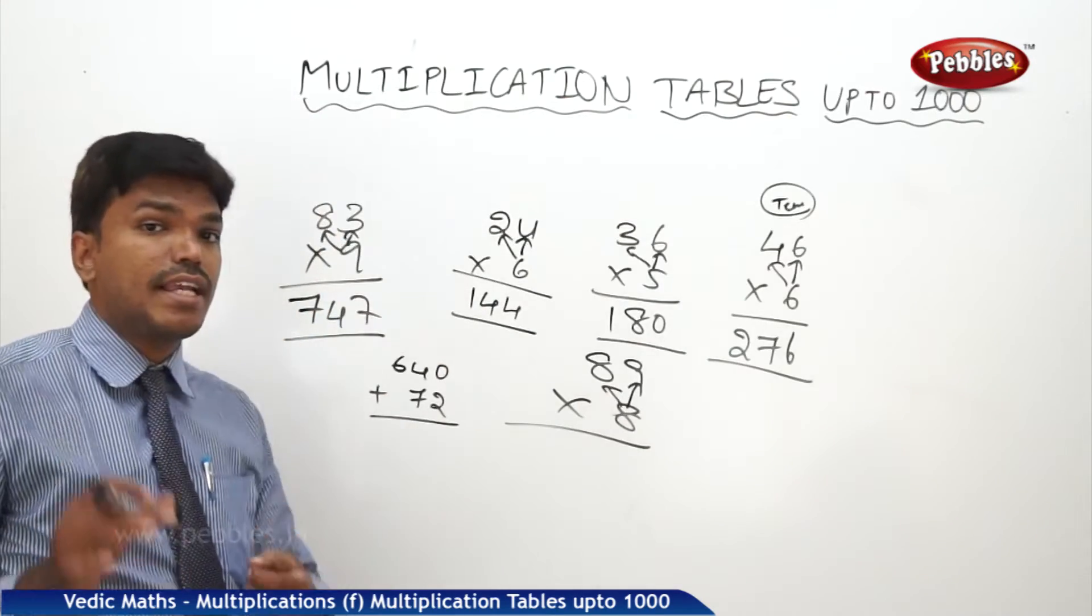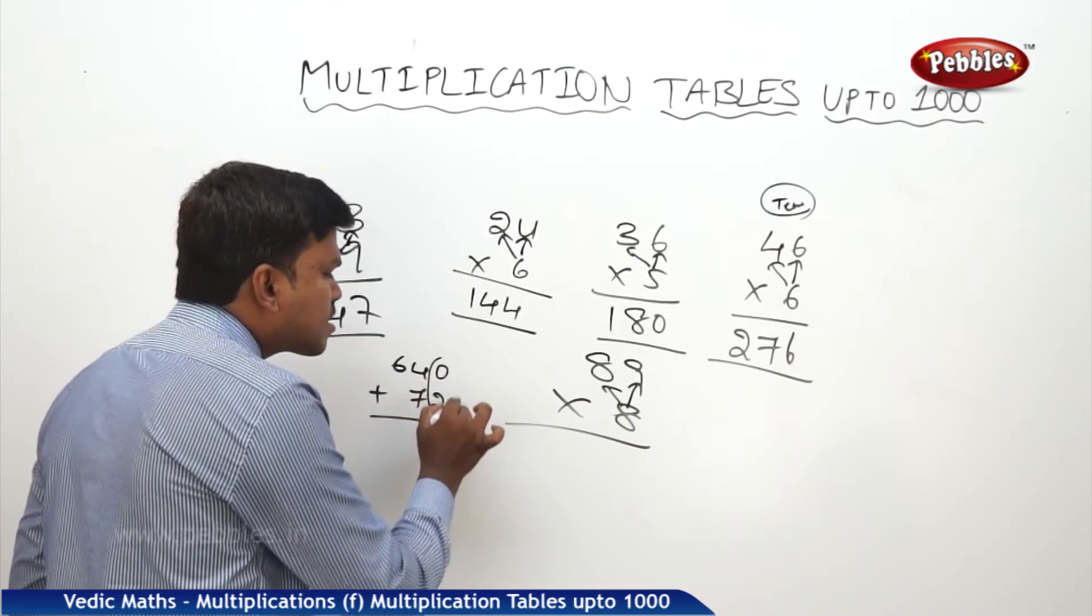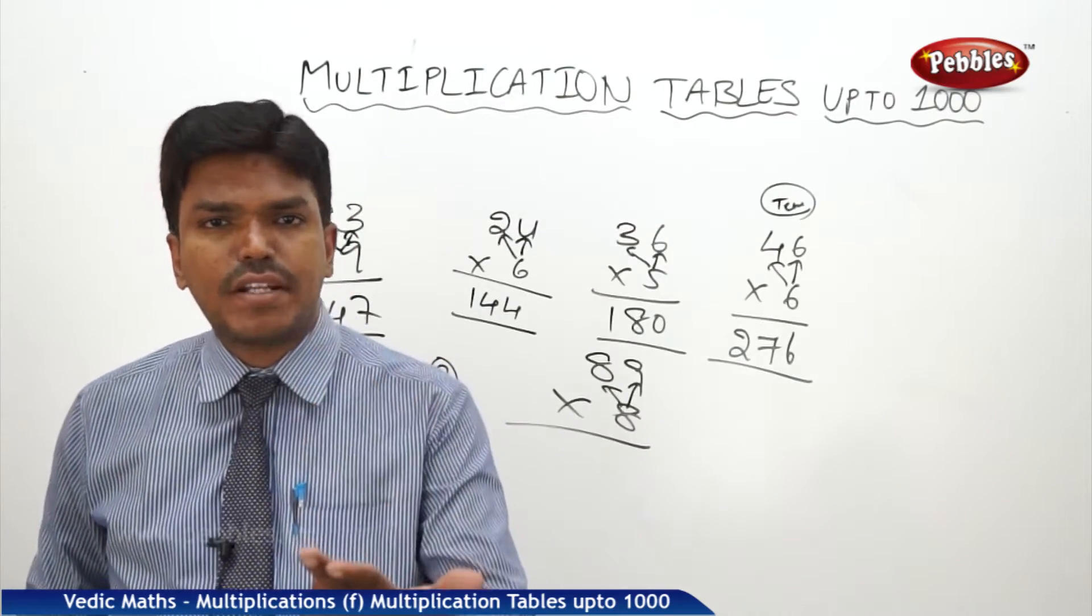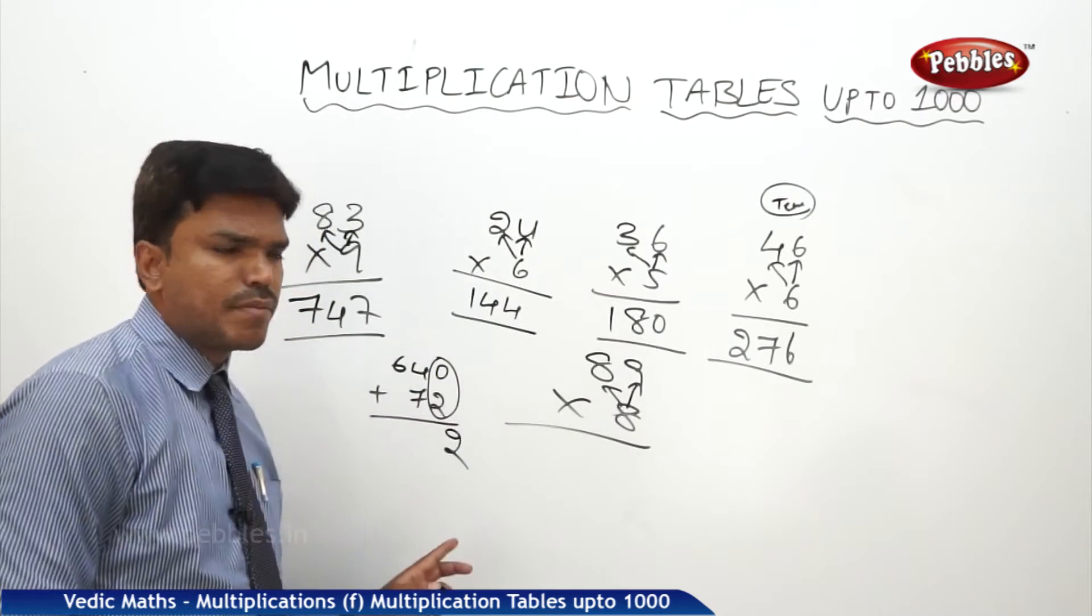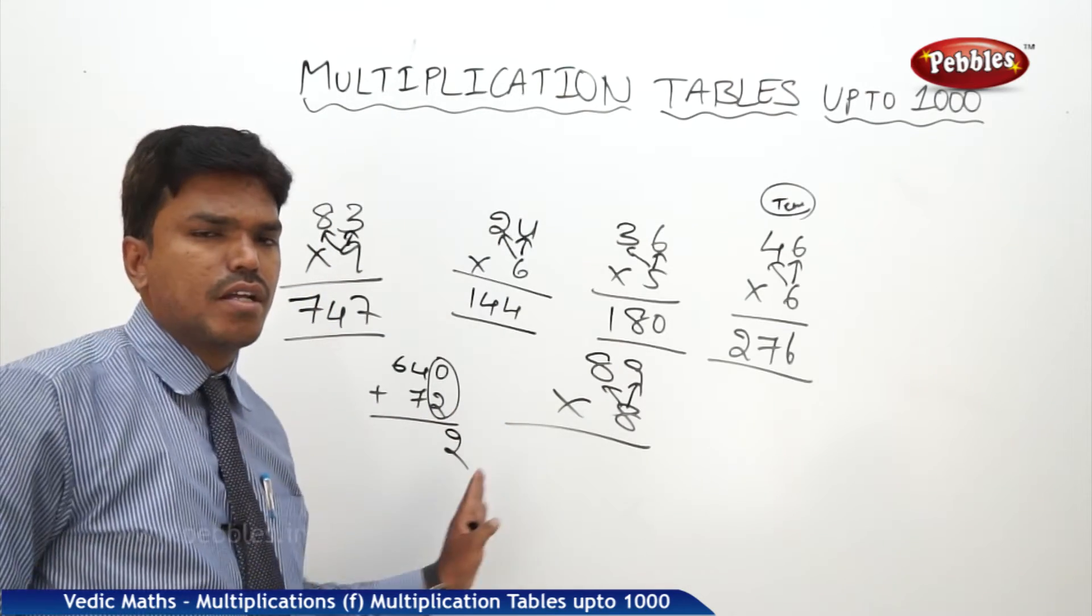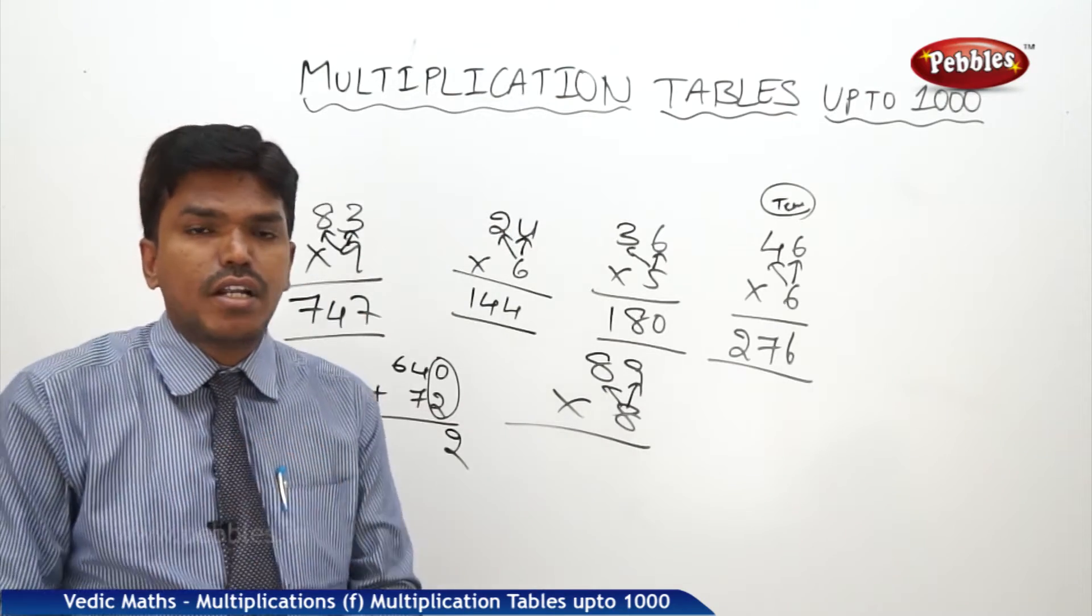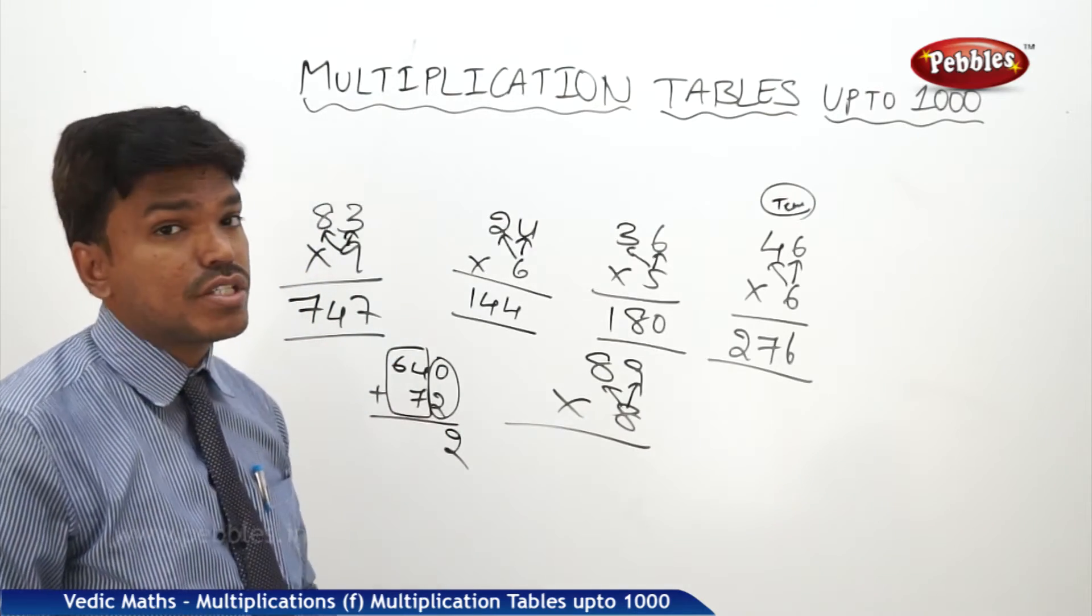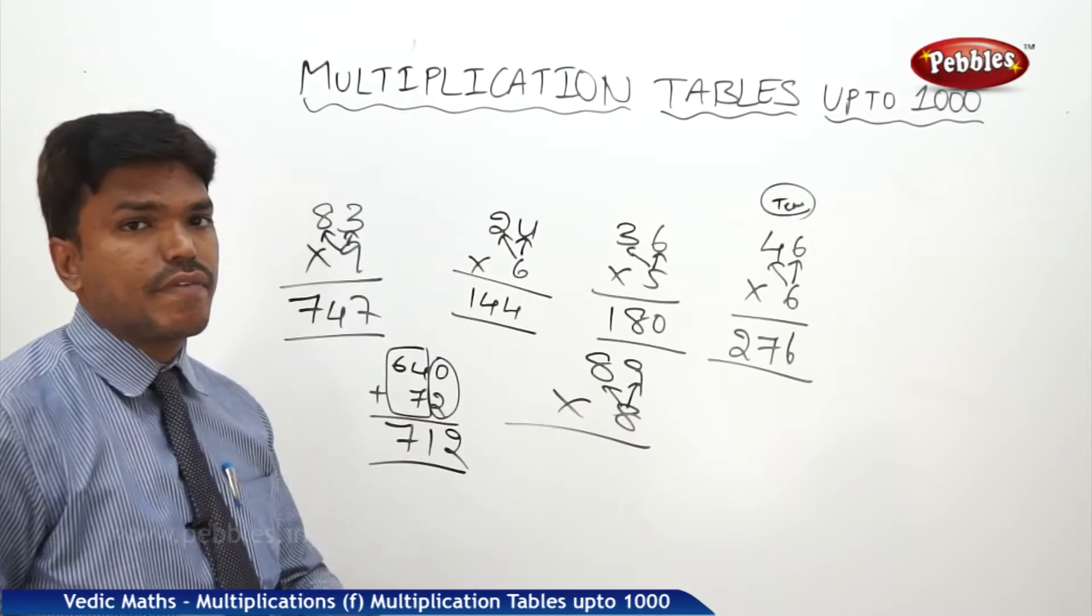Now see here how to deal with it easily. Remember 640 plus 72 - anyhow the last digit will be coming as it is. Why? Because we are going to add it with 0. 0 plus 2 anyway is 2 only. So for some time ignore about the last digit 2 - keep it aside because we don't need to bother. Now concentrate on the remaining part, 64 plus 7, how much? 64 plus 7 is 71. So our answer is completely 712.